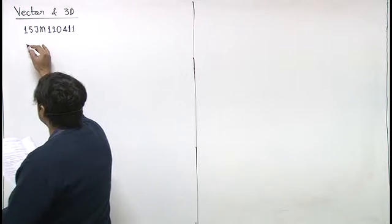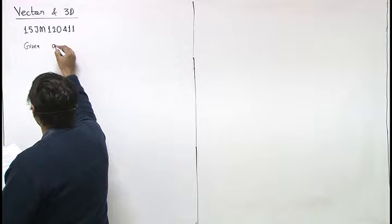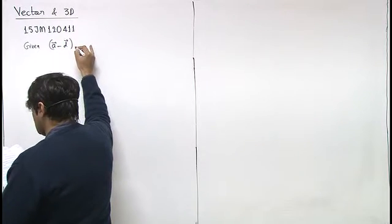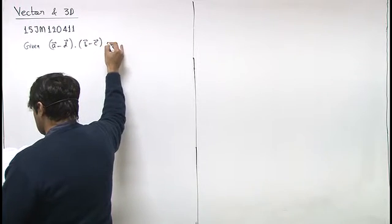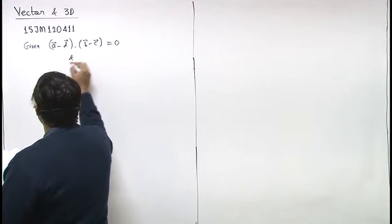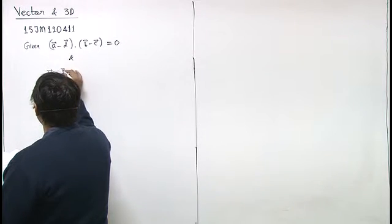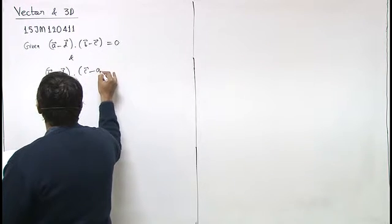Such that A minus D dot B minus C is zero, and B minus D dot C minus A is also zero.